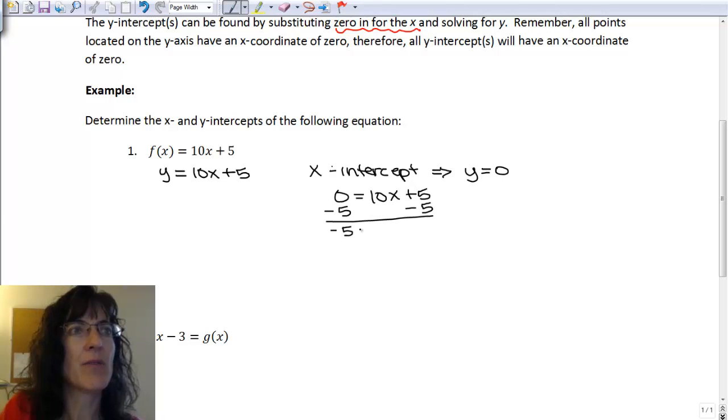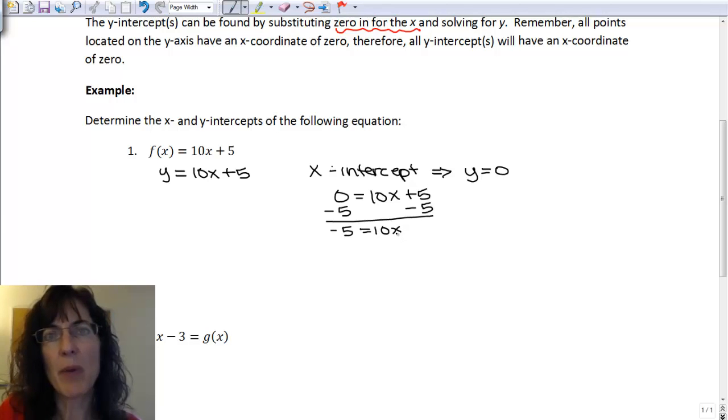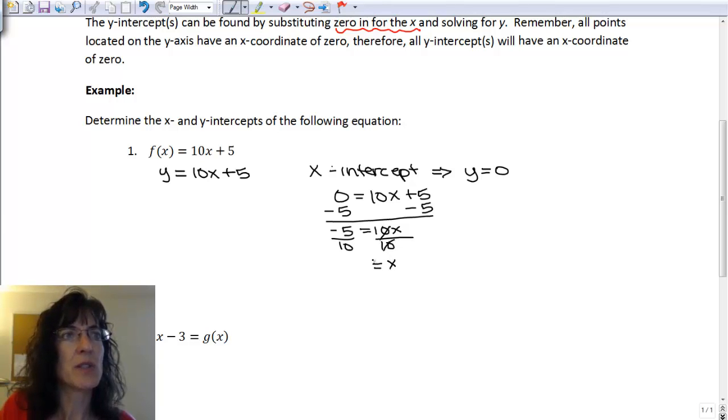And then I have negative 5 equals 10x. Now I want the x by itself, so I'm going to divide both sides by 10. And on the right I have just an x because the 10's reduced. On the left, I can reduce that, divide 5 on the top and the bottom, or the numerator and the denominator. So negative 5 divided by 5 is negative 1. 10 divided by 5 is positive 2. So my x part is negative 1 half.